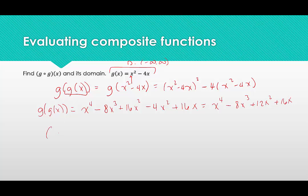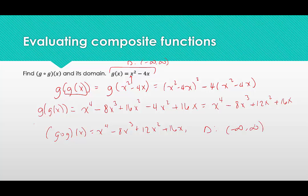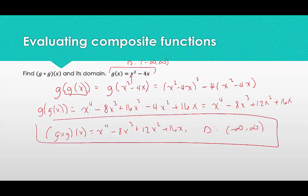So g of g of x = x⁴ - 8x³ + 12x² + 16x. The domain is also a polynomial, so there are no restrictions — the domain is (-∞, ∞). Thank you for stopping by.